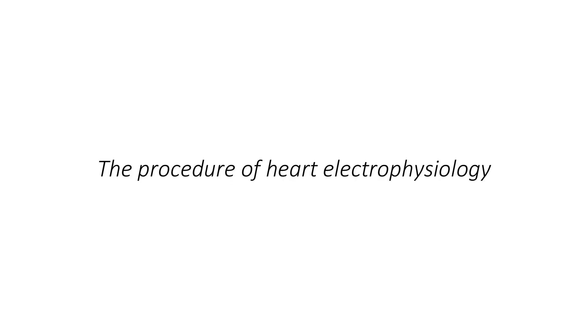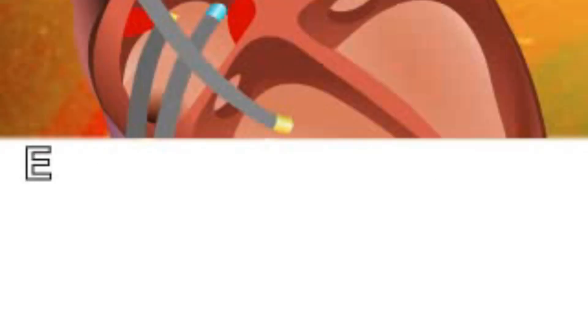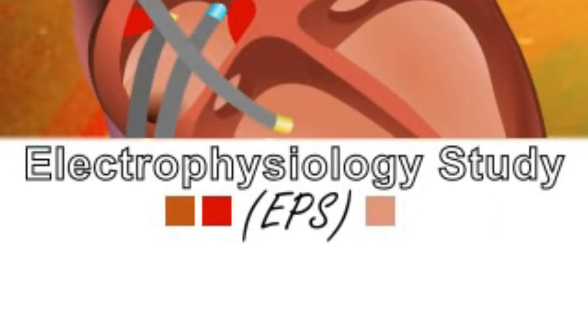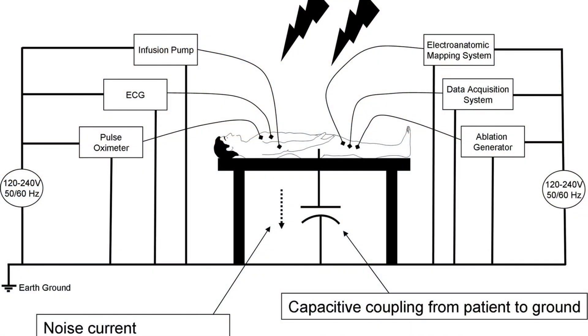The EP study is performed in the electrophysiology laboratory of the hospital, where you'll be placed on an x-ray table. A camera and television screens, heart monitors, and various instruments will be close by. Electrodes will be placed on your chest and back to connect you to monitoring equipment. A blood pressure cuff will be placed on your upper arm to monitor your blood pressure. To prevent infection, a nurse will shave and cleanse the groin and possibly neck area where the catheters will be inserted.